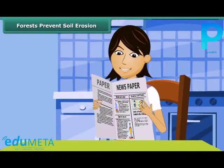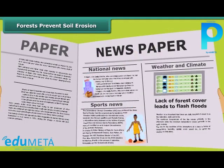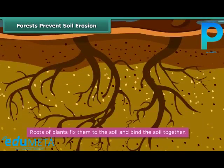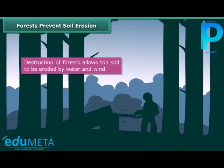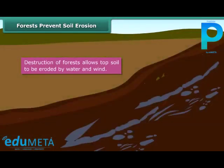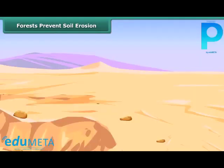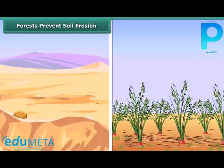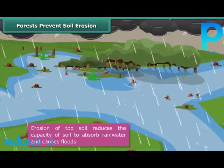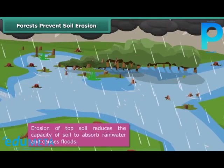Lina comes across a headline in the newspaper: 'Lack of forest cover leads to flash floods.' She is eager to know the connection between forests and floods. Roots of plants not only fix them to the soil, but also bind the soil together. When forests are destroyed, the topsoil becomes loose and is eroded by water and wind. This causes an increase in desert land and reduces the fertility of the soil. Erosion of topsoil also reduces the capacity of soil to absorb rainwater, and as a result, there are floods.